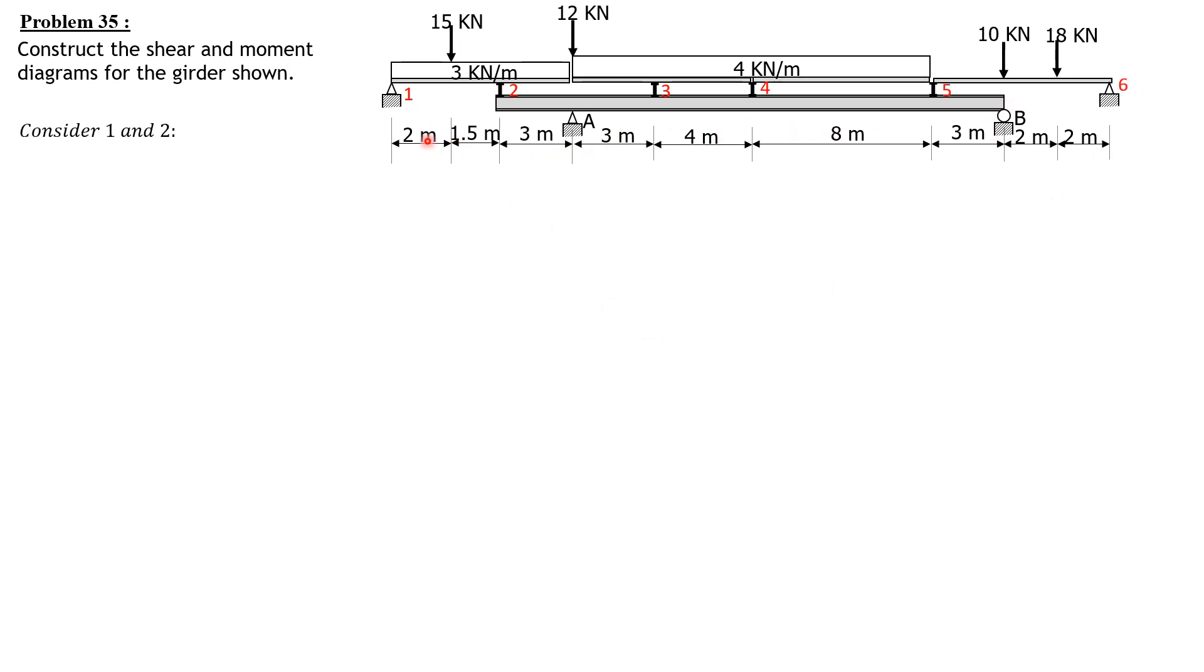First, let's consider supports one and two. Summation of moments about one equals zero. So R2 times 3.5 equals 15 times 2 plus 3 times 6.5 times half of 6.5, which is 3.25. So R sub 2 is equal to 26.679 kilonewtons.